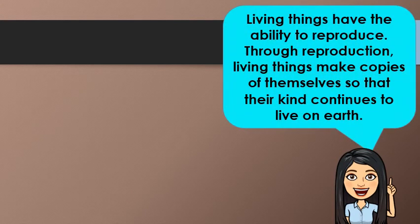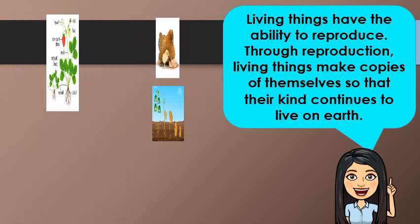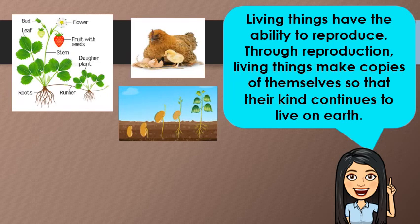Living things have the ability to reproduce. Through reproduction, living things make copies of themselves so that their kind continues to live on earth. Just like plants and animals, they produce their own kind. Human mothers give birth to their young ones, just like female dogs, cats, pigs, and dolphins. Other animals like birds, lizards, frogs, and fishes lay eggs.